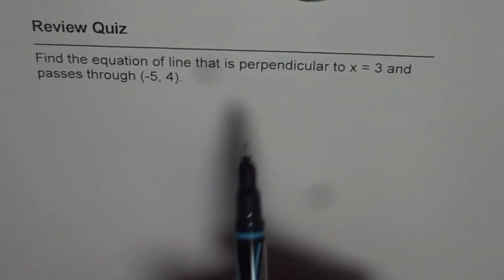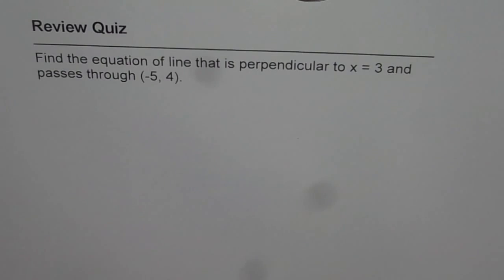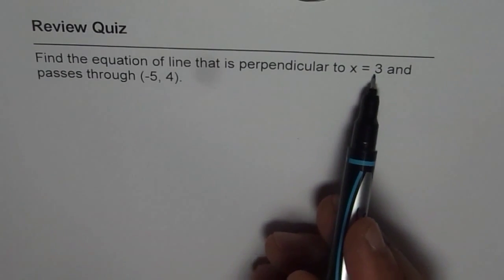Now you know perpendicular lines are lines where the slope is negative reciprocal, correct? Now here, what is the slope?